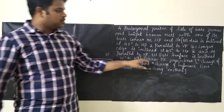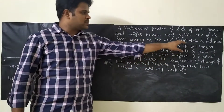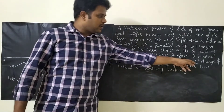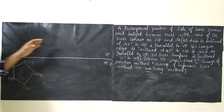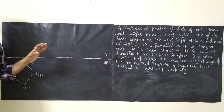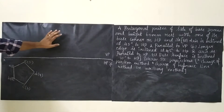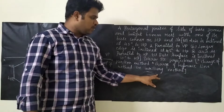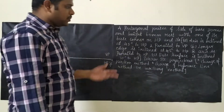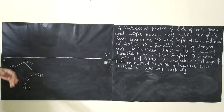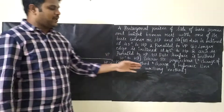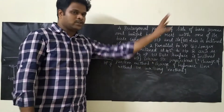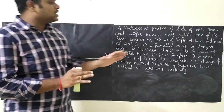In the question, they ask us to draw the projection using the change of position method. We will draw a diagram and change its position to represent the final diagram. Another method is called the auxiliary plane method, which is similar to section of solids, but that method is not in our current syllabus. We will be dealing only with the change of position method.